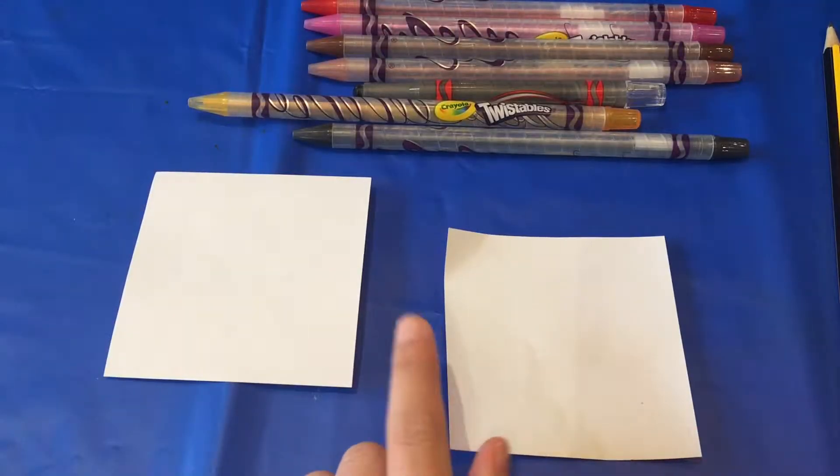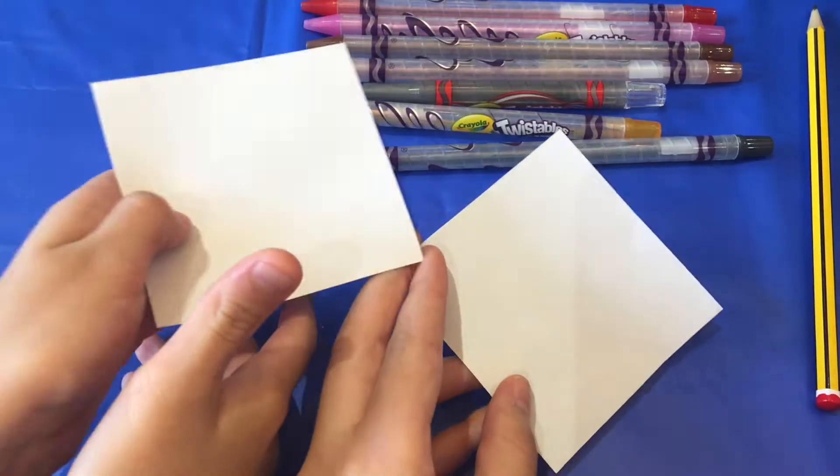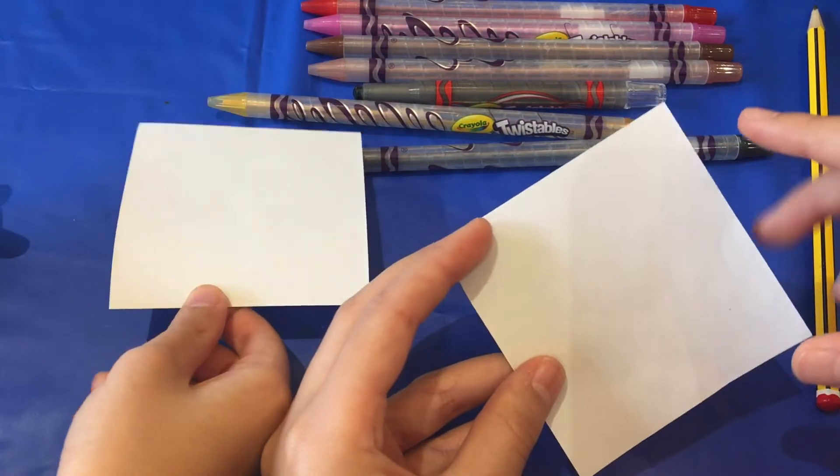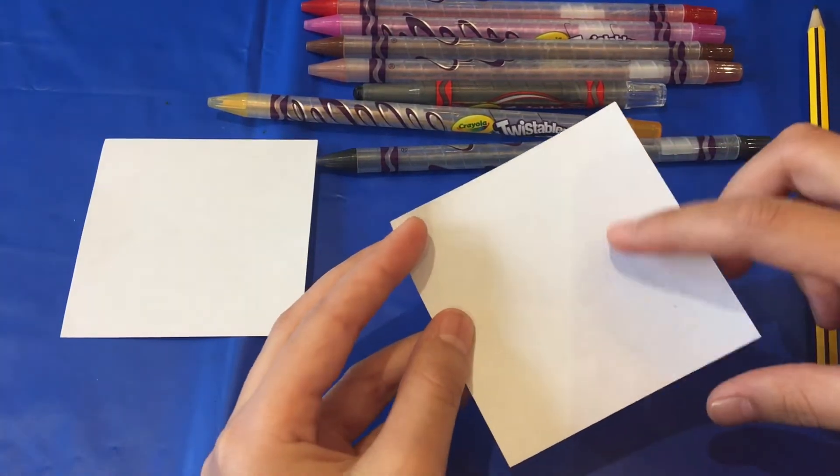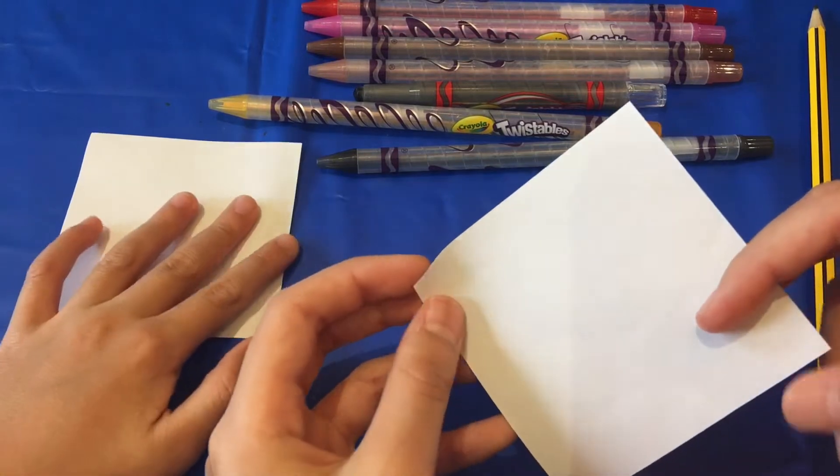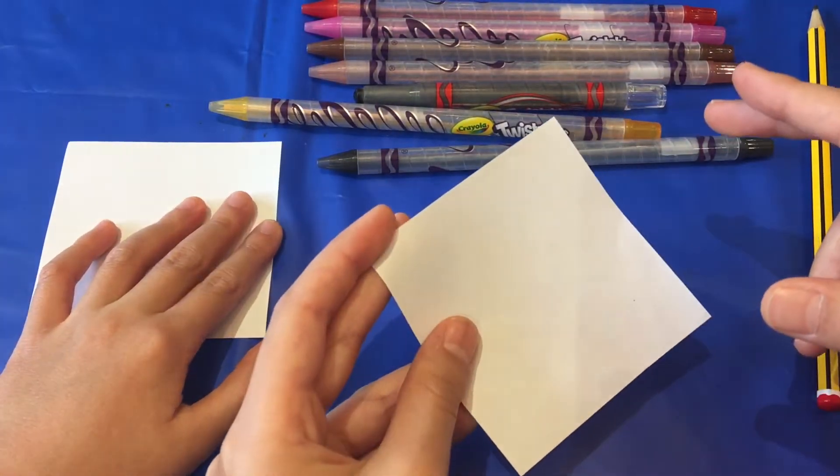The two animals are going to be a bear and a cat. So you can just use one piece of paper or you can make two and one can be a cat and one can be a bear. So we're going to start off with doing the cat. The ears are easier to make.